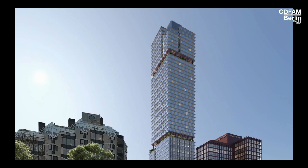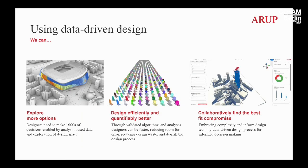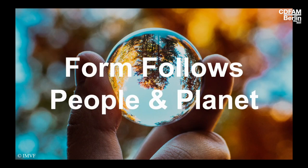What was really nice on all these projects is that the client and architects really enjoyed this data-driven design process. I found a quote by Parametric Monkey: solutions that we generate should be seen as a starting point to underlay, trace over, and modify to actually create a better solution. Because with computational design, we can explore more options, design efficiently and quantifiably better, and most importantly collaboratively find the best-fit compromise solution — in order to design for form follows our planet.